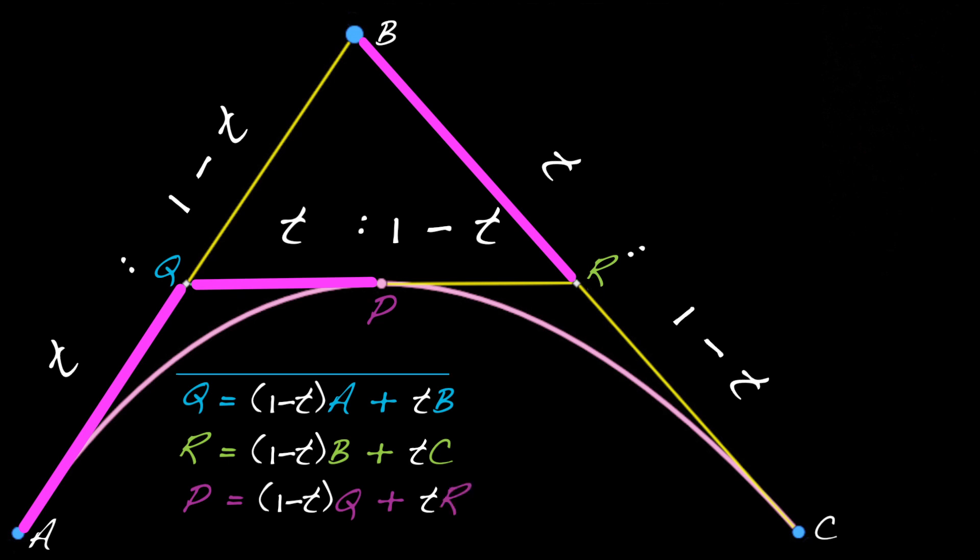So with these three formulas taken together, we can compute any point on the parabola we like just by varying the value of t. The next exercise will give you some practice using these formulas to solve a few problems.